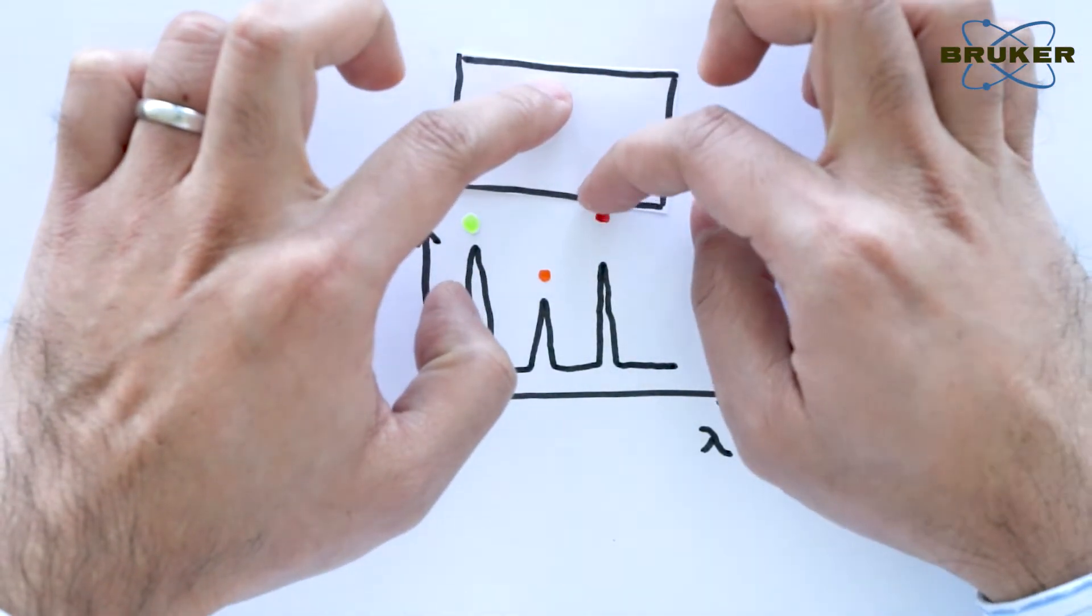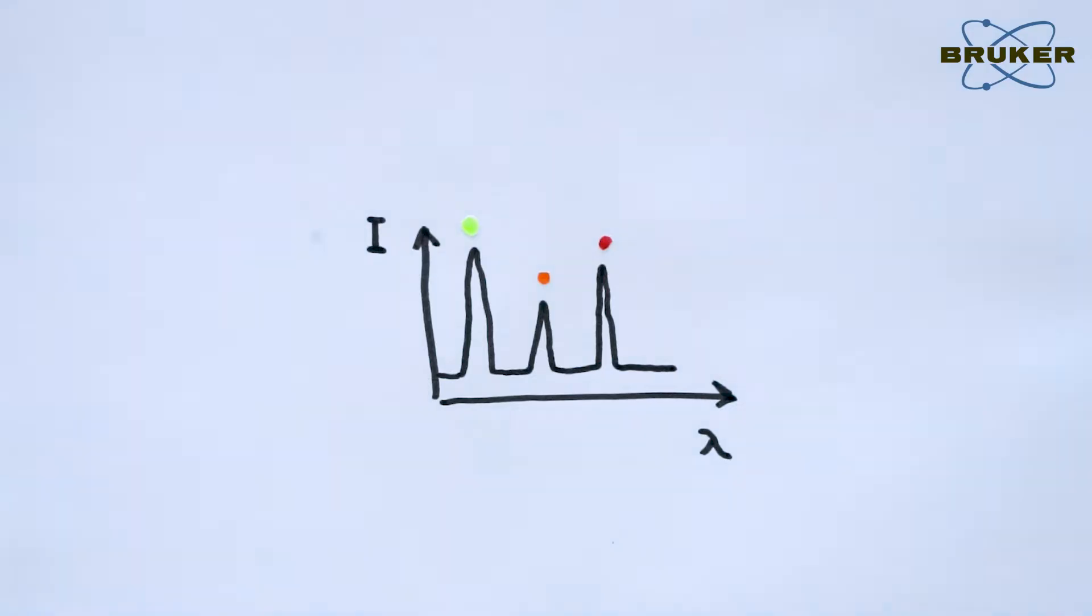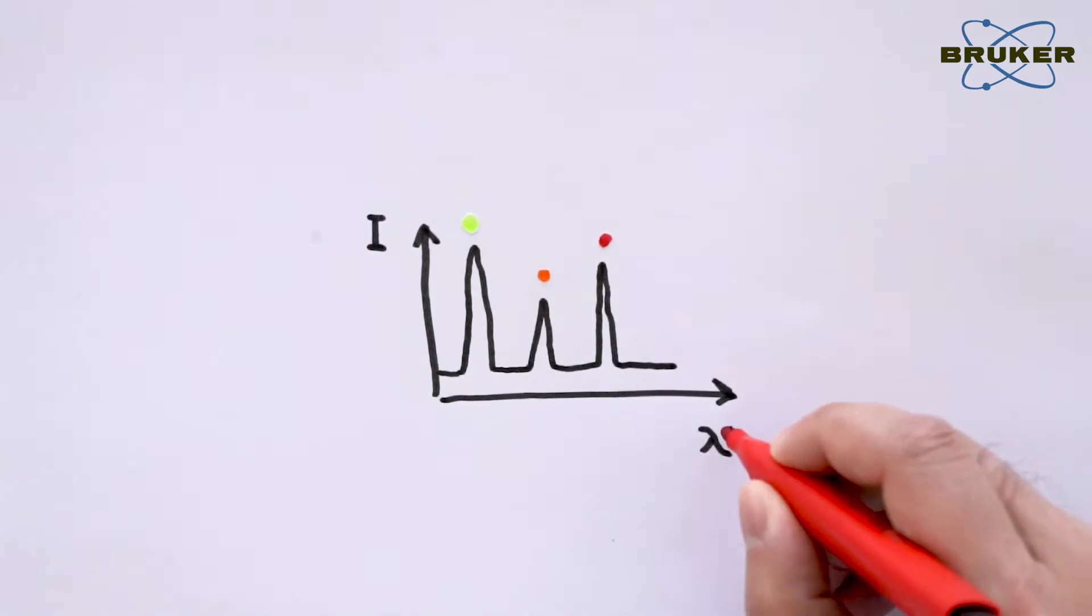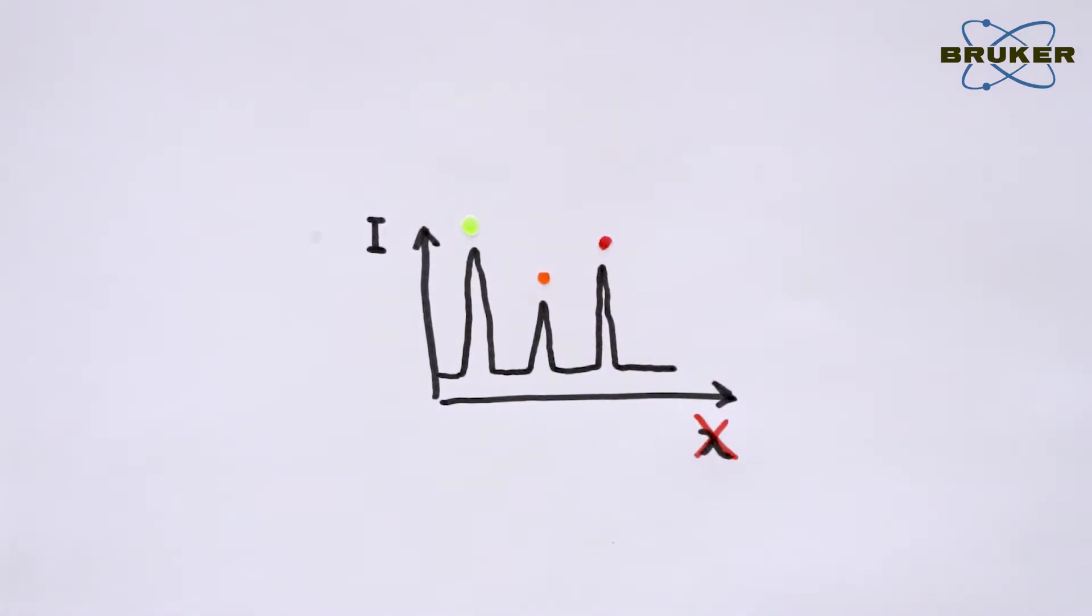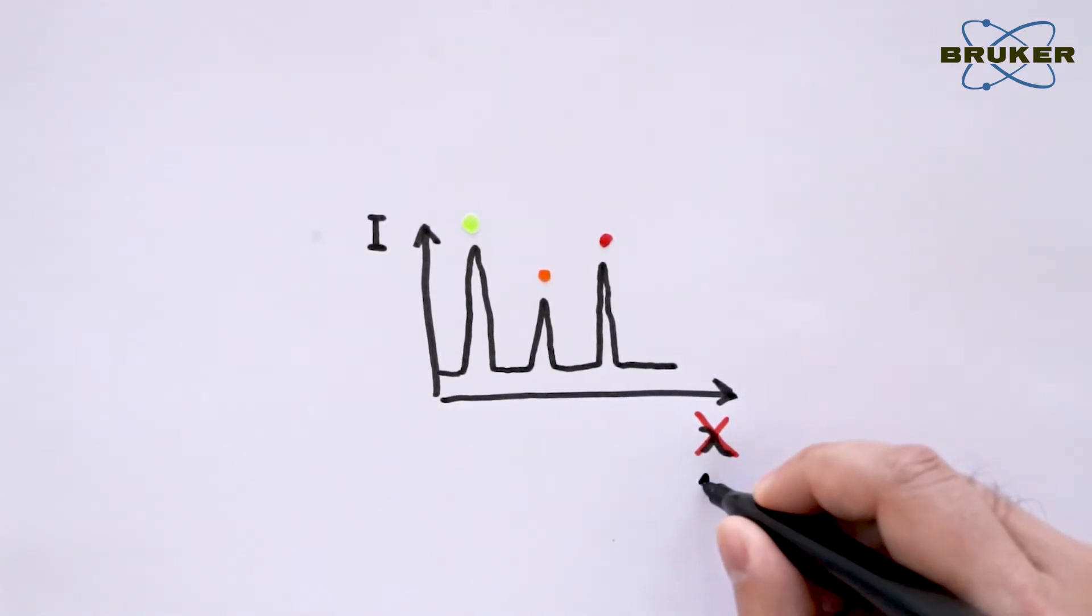Now, we have the Raman scattering intensity as a function of wavelengths. However, in Raman spectroscopy, we make it a bit more complex, as we do not use wavelengths as our x-axis.